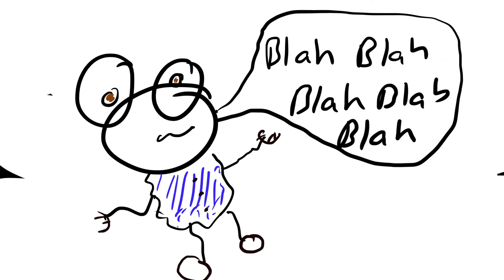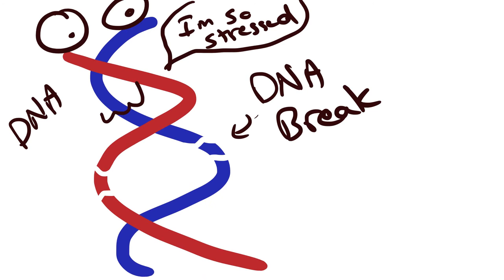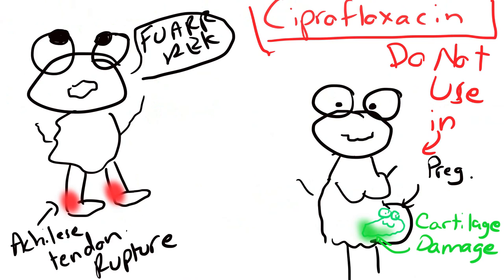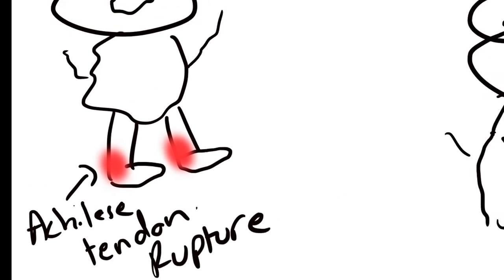So these antibiotics work by inhibiting the topoisomerases, so there's a bunch of stress on the DNA. That's how it breaks. A few of the side effects of these fluoroquinolones, especially ciprofloxacin, is tendon rupture, and you also want to avoid using it in pregnant patients because it can damage the cartilage.